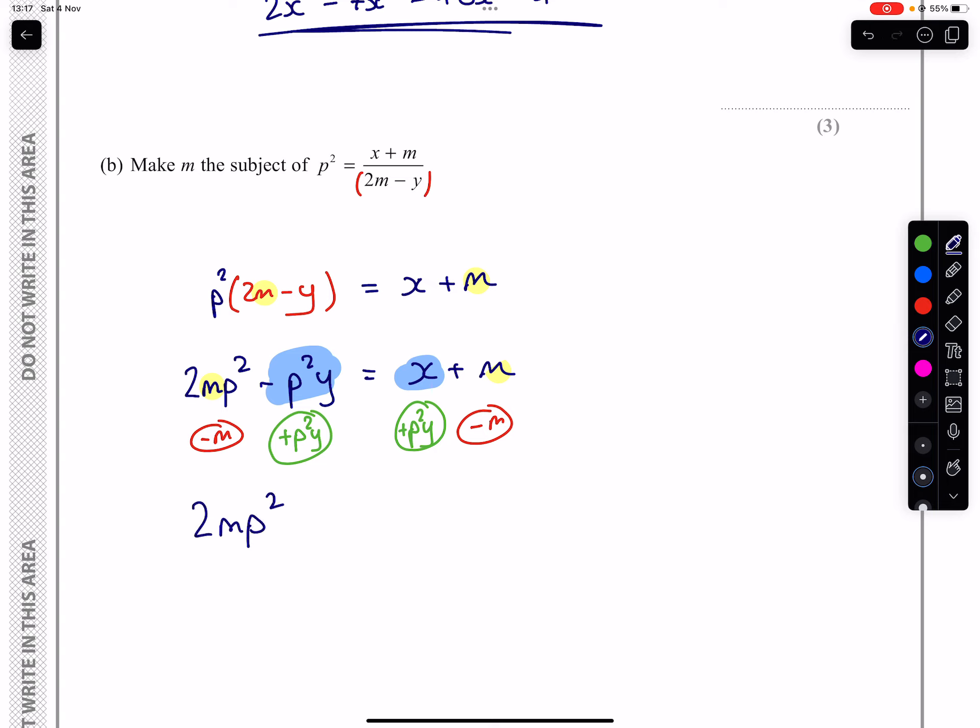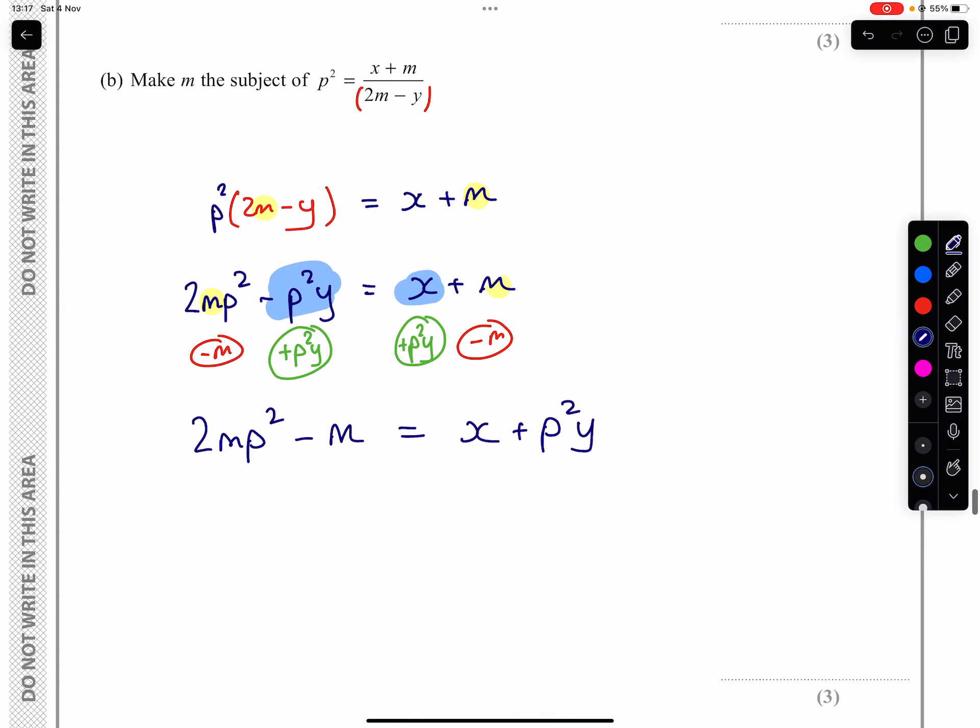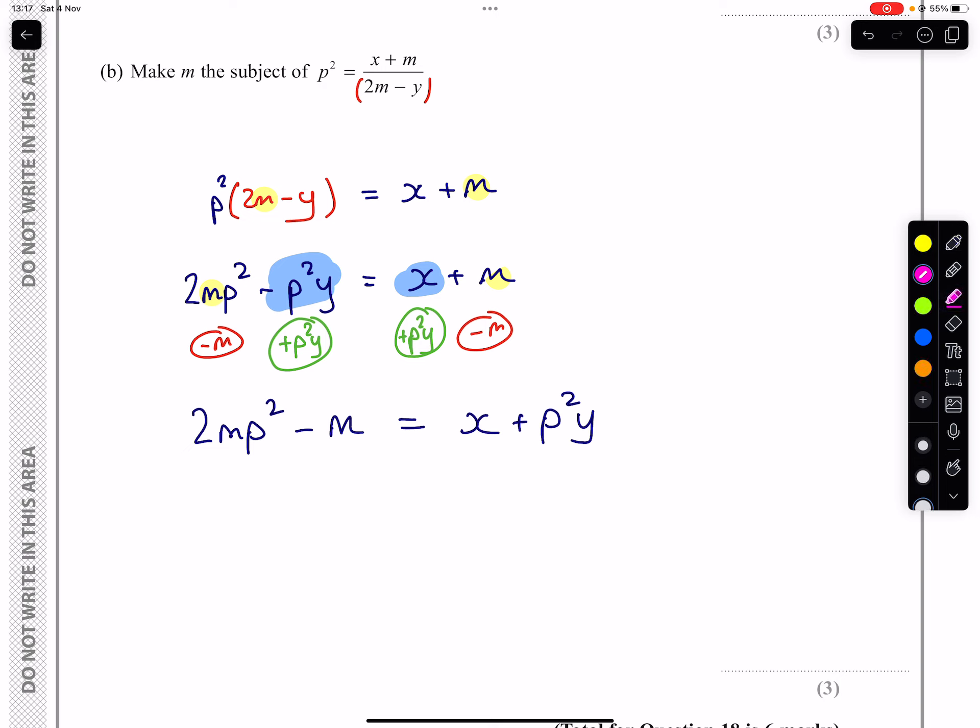So writing this out, 2M P squared take away M is what the left-hand side has now and X plus P squared Y is what the right-hand side has. These two terms here cannot mix because we cannot combine 2P squared with the number 1. So when they cannot mix, we take M out as a common factor and we leave the stuff that doesn't mix in a bracket. So 2P squared take away 1 being what's in the bracket.